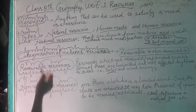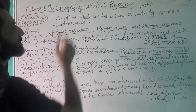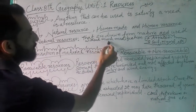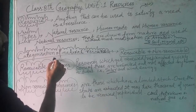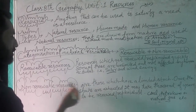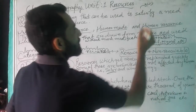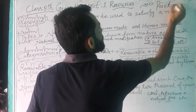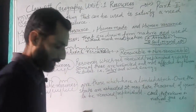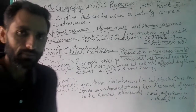In today's video, we have studied Geography Chapter 1 on Resources. We covered resources, natural resources, human-made resources, and human resources. Natural resources are categorized as renewable and non-renewable, and we learned the definitions of both. This is Part 1 of this chapter. In the next part, we will study the rest of the topic. Have a good day and goodbye.